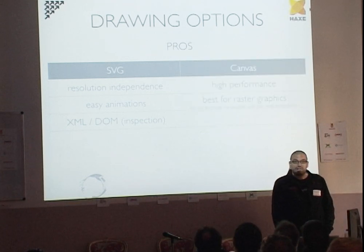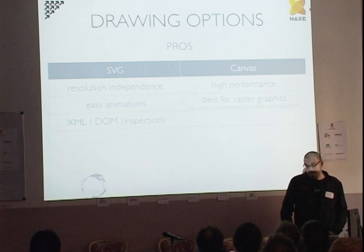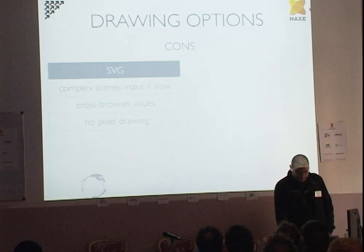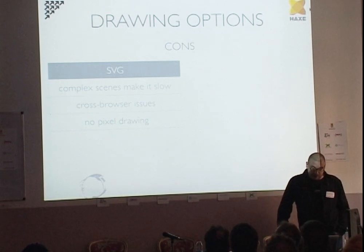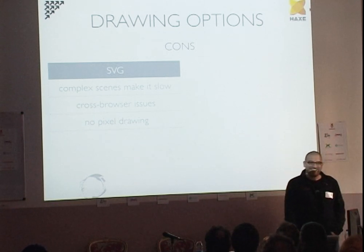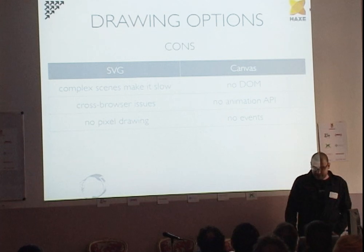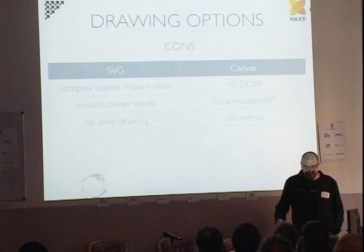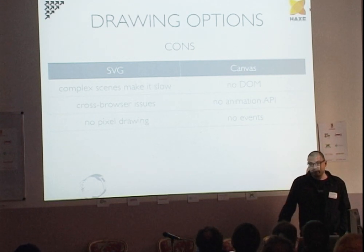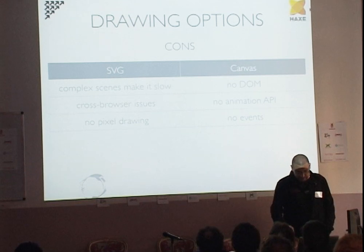On the other side, we have Canvas, which has very high performance and is best for raster graphics. If you need to paint at a pixel level, Canvas is better. But there are some costs: SVG becomes slower with increasing complexity, there are cross-browser issues — mainly Internet Explorer — and there is no pixel drawing for very complex scenes. On Canvas, you don't have a DOM, so the Canvas is just a big bitmap. You can only analyze pixels, there is no animation API, and there are no events — though I've seen a recent draft for adding events inside Canvas, so maybe in the future.